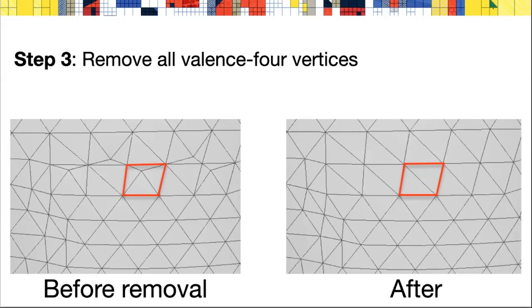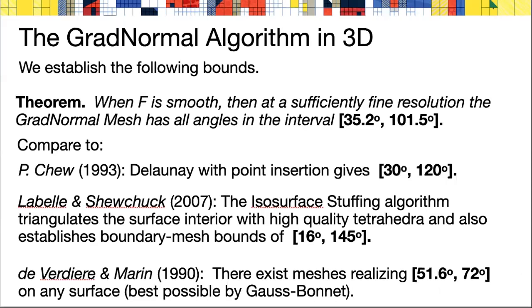You can establish the following theorem. When you have a smooth surface and a sufficiently fine resolution, then the GradNormal mesh has all angles in the interval between 35.2 and 101.5 degrees.